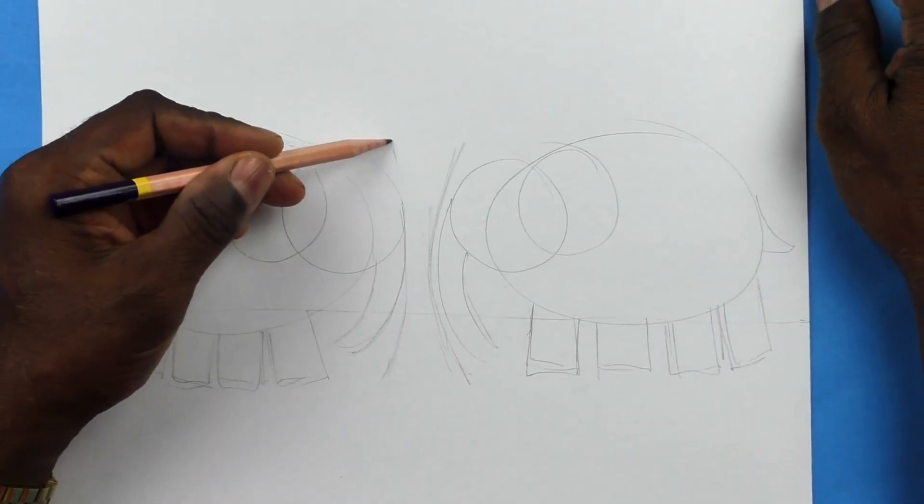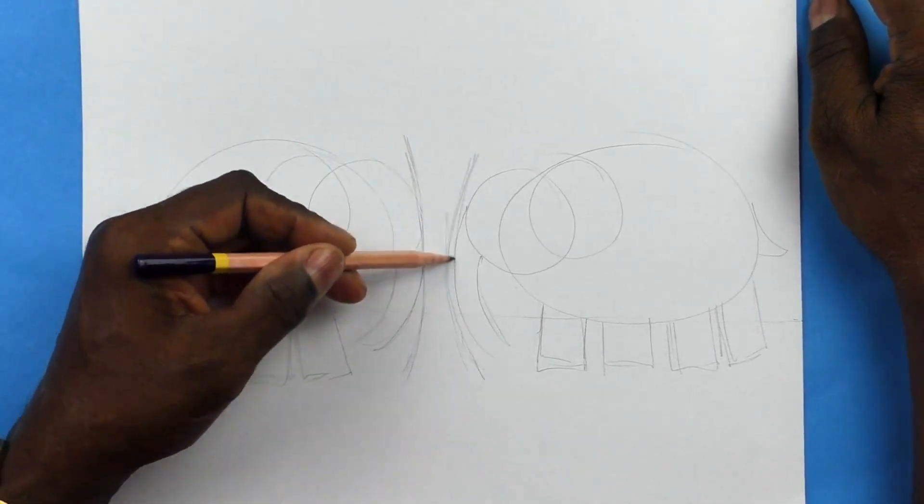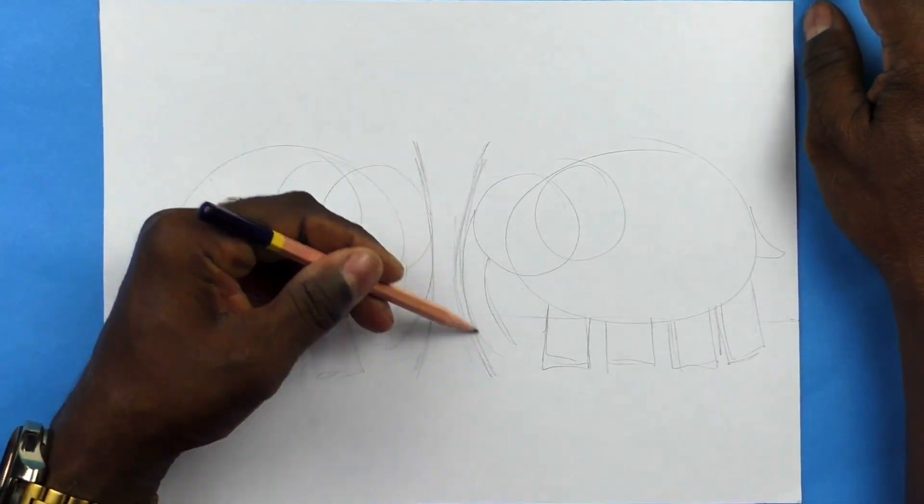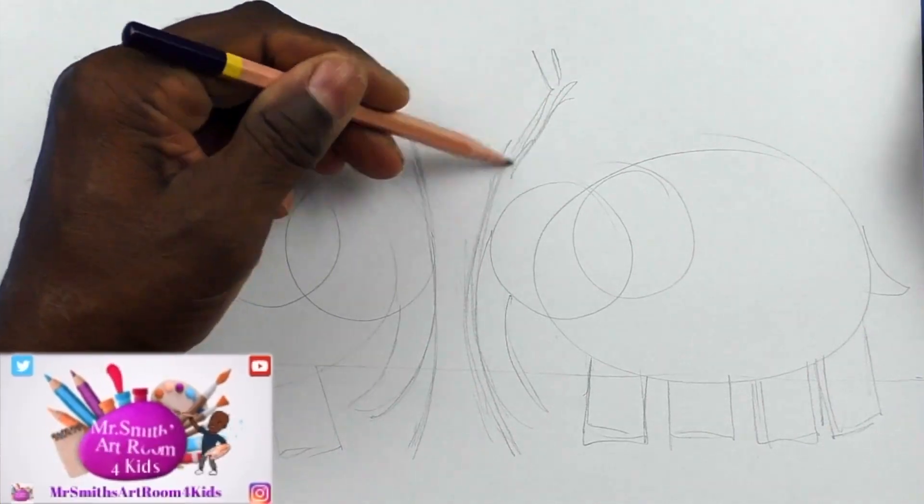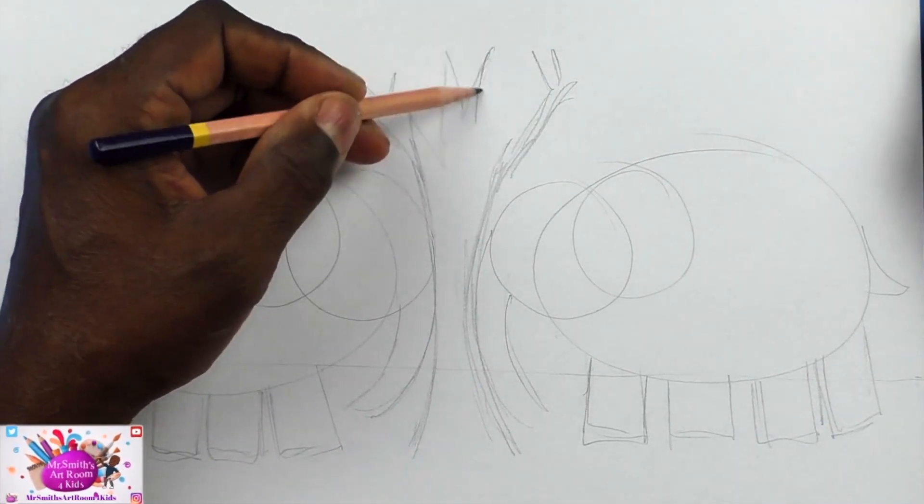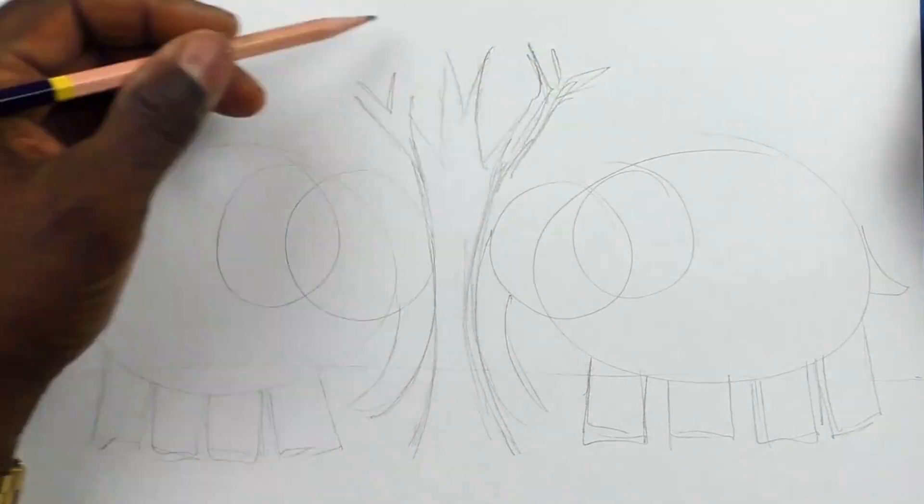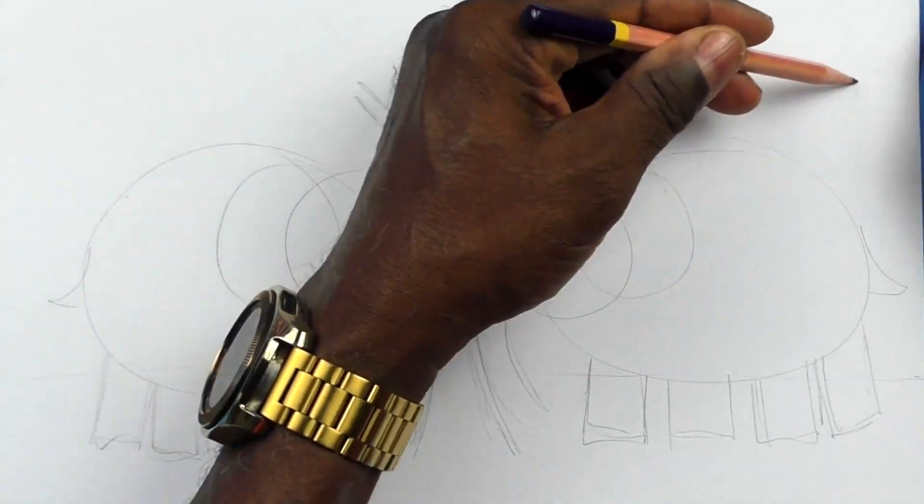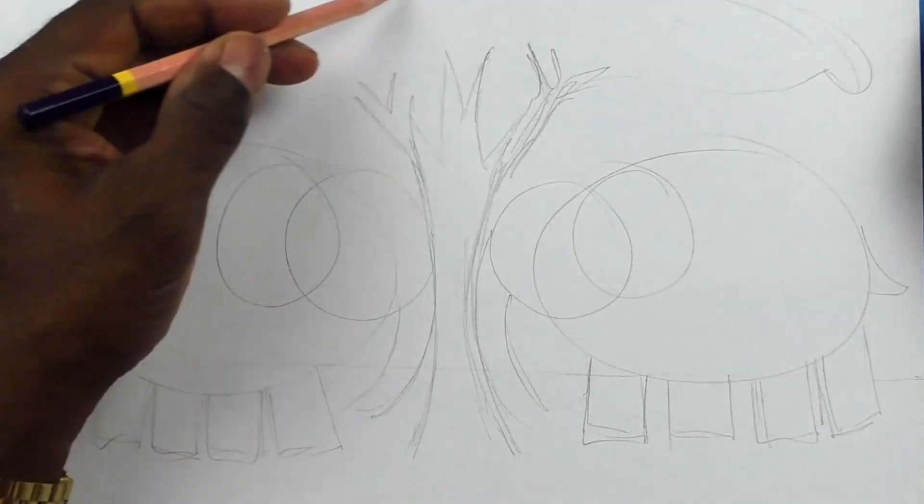I'm now making a tree that will go up between the two elephants. When I make trees I like to make almost a Y shape. And then I have the branches coming out of that spreading Y form. My top of my tree is similar to a cloud.